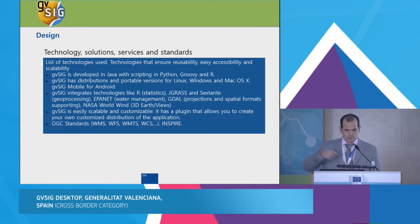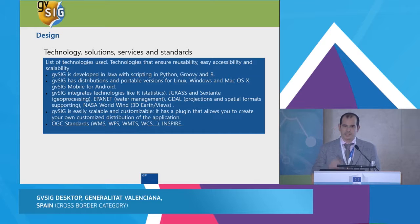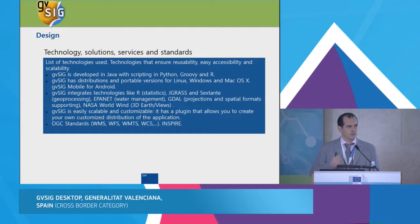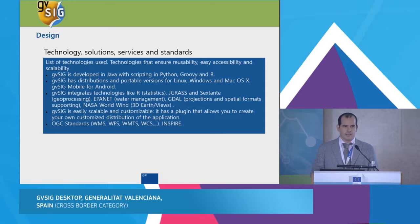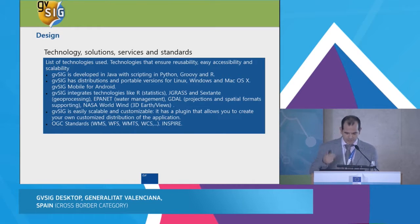Moving on to design. You can develop in GVSIG using Java, Python, Groovy, and R. You can use GVSIG on Linux, Windows, and Mac, and GVSIG Mobile on Android. GVSIG integrates technologies like R, GDAL, GRASS, WorldWind, and Epanet. And of course, GVSIG is easily customizable.